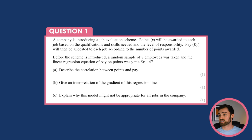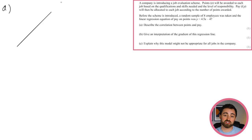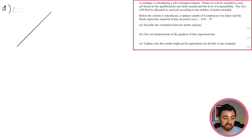It says a company is introducing a job evaluation scheme. Points will be awarded to each job based on qualifications, skills needed, and the level of responsibility. Pay will then be allocated according to points awarded. A random sample of eight employees was taken and the linear regression of pay on points was given. Basically, given a certain number of points x, you find out the pay. The gradient is positive, so it goes up — there's a positive correlation. The more points you have, the more pay you get. We'd describe this as a positive correlation.